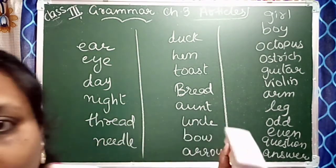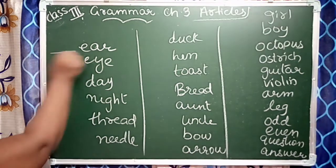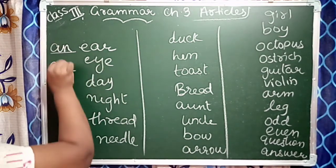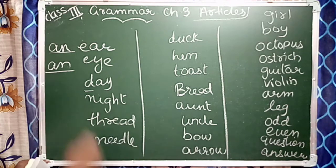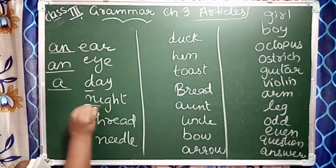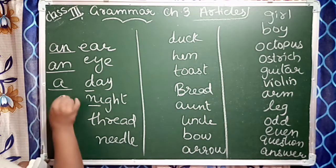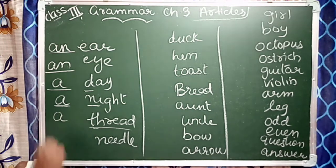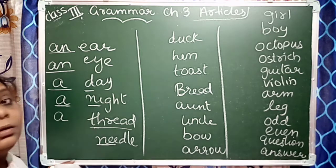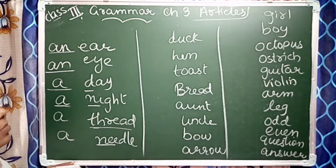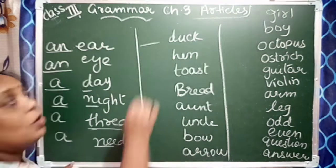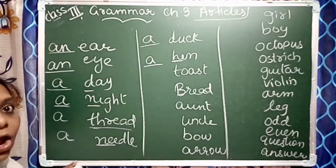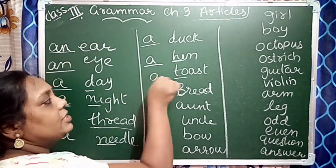Okay, 'ear' — what is right here? It's a vowel sound. So what do you write? 'A' is a consonant. So we write 'a' for consonants, and 'an' for vowel sounds. Needle — consonant, so 'a'. Duck — consonant, 'a'. Hen — consonant, 'a'. Toast — consonant, 'a'. Bread — consonant, 'a'.